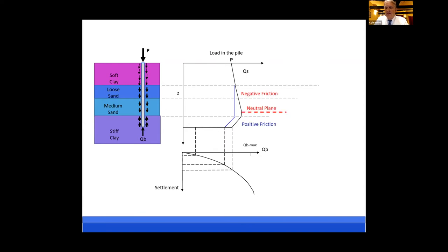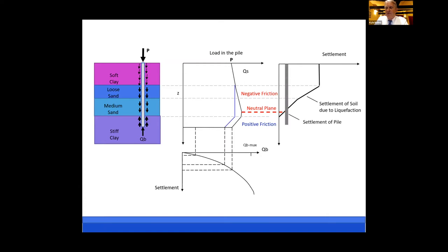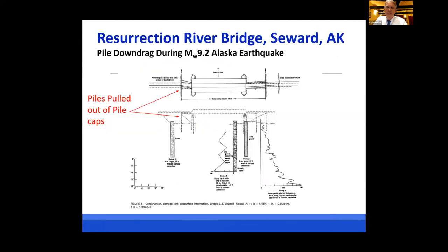The neutral plane is the point where we have the maximum load in the pile, which is important for structural design. Above the neutral plane we have negative friction; below it we have positive friction. We can also look at this in terms of settlement — plotting settlement of the soil due to liquefaction versus settlement of the pile. The neutral plane is the location where pile settlement equals soil settlement.